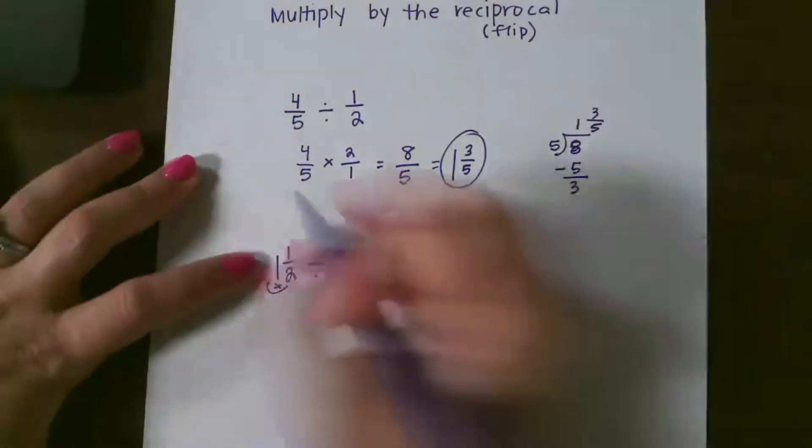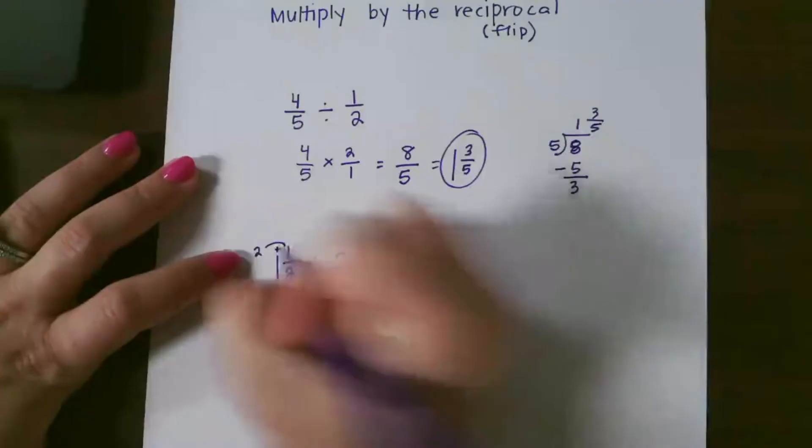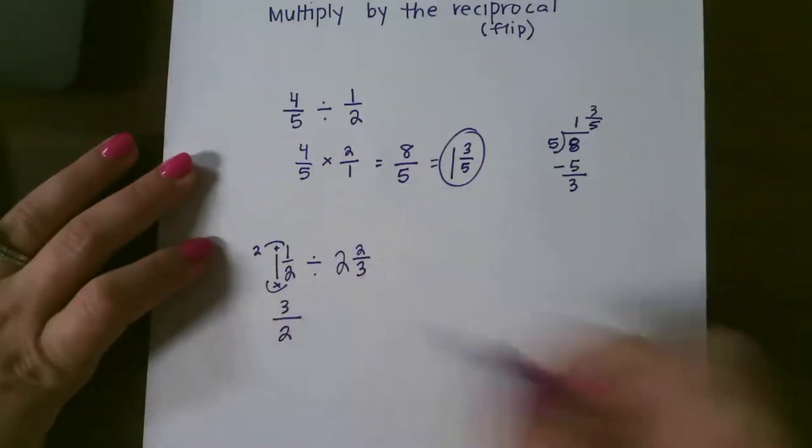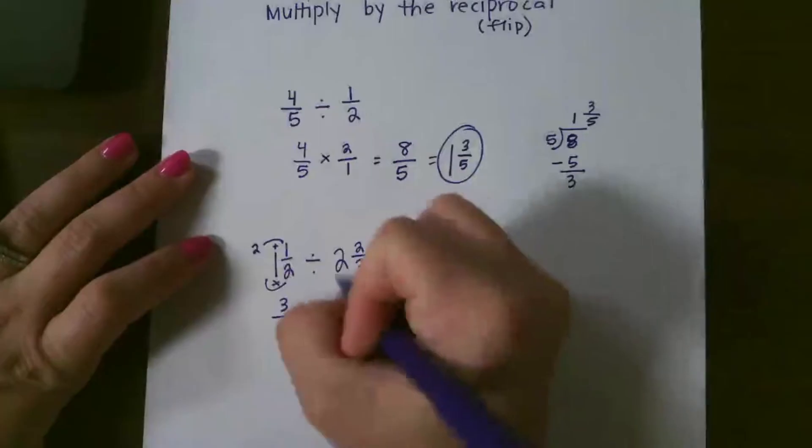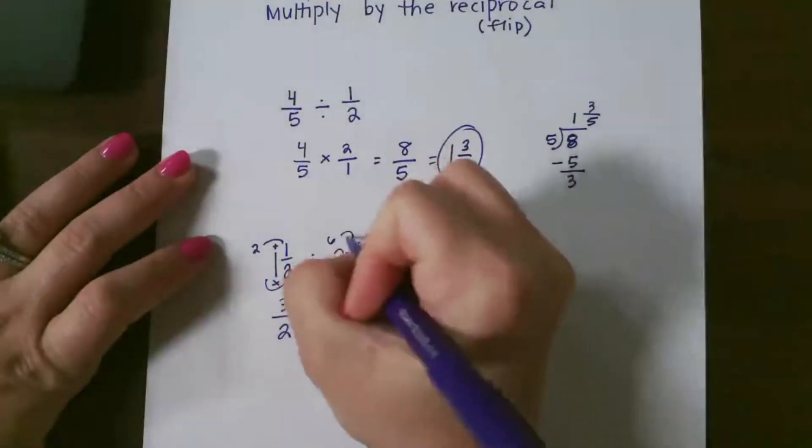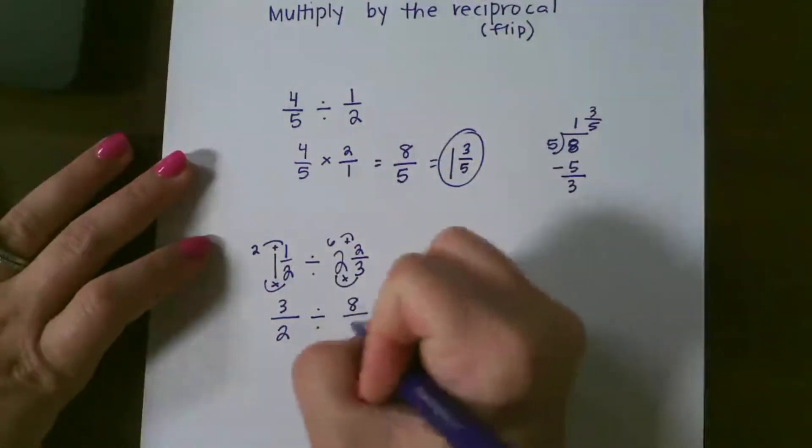So 2 times 1 is 2, plus 1 is 3, so 3 over 2. 3 times 2 is 6, plus 2 is 8.